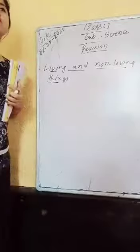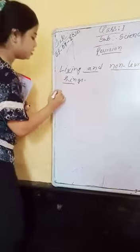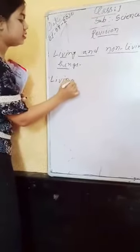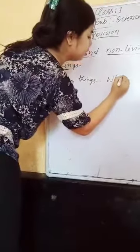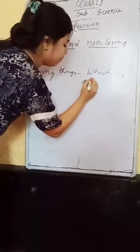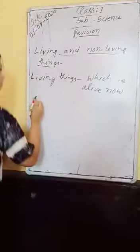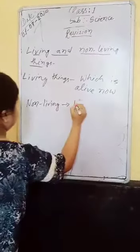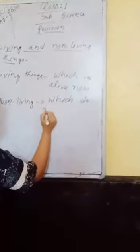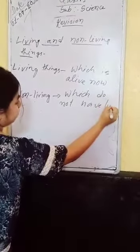There are a lot of things all around us. Some are living and some are non-living. Living things are which are alive now. And non-living things are which do not have life.